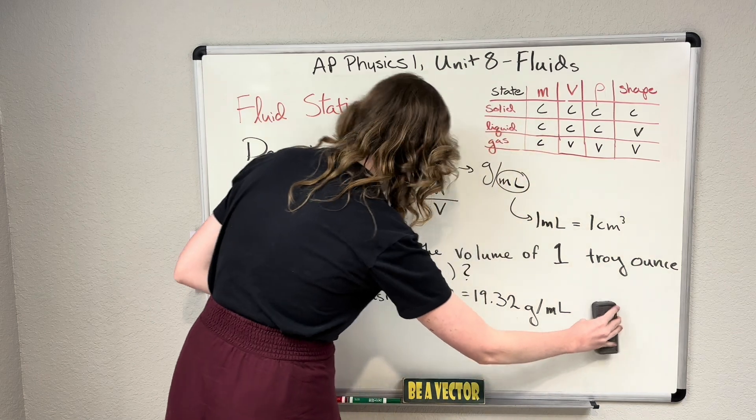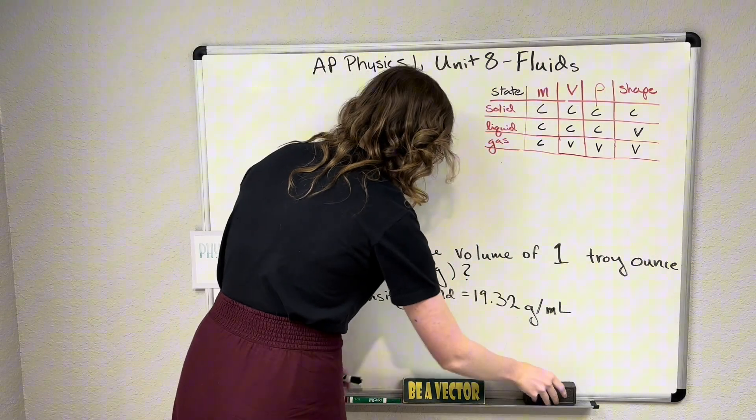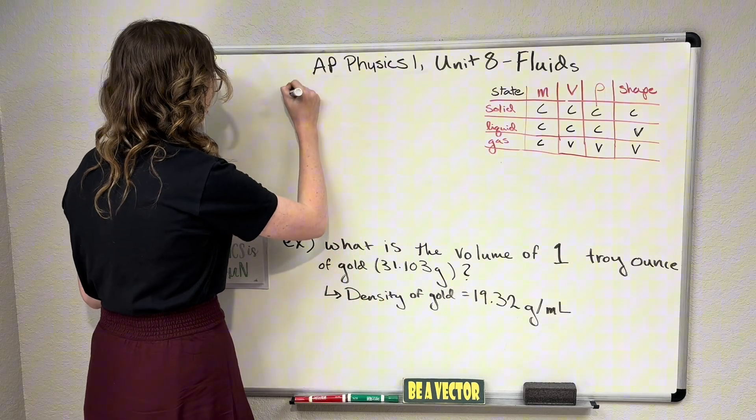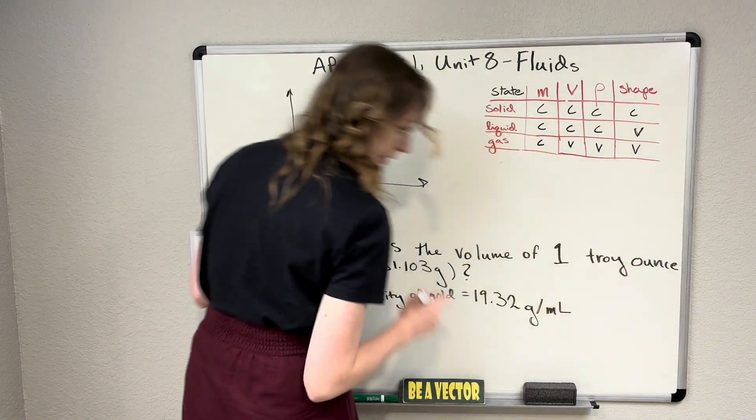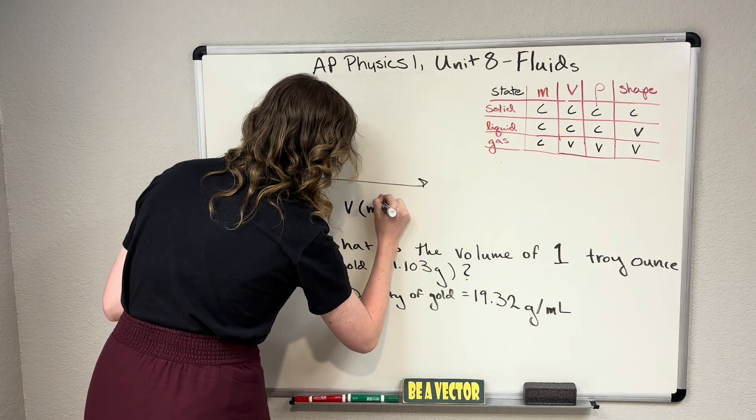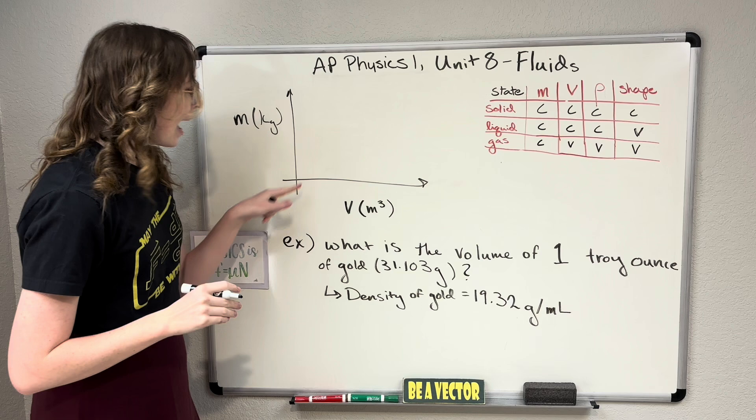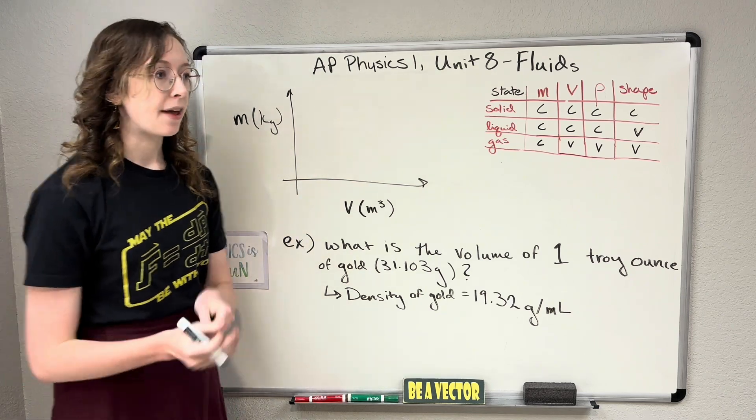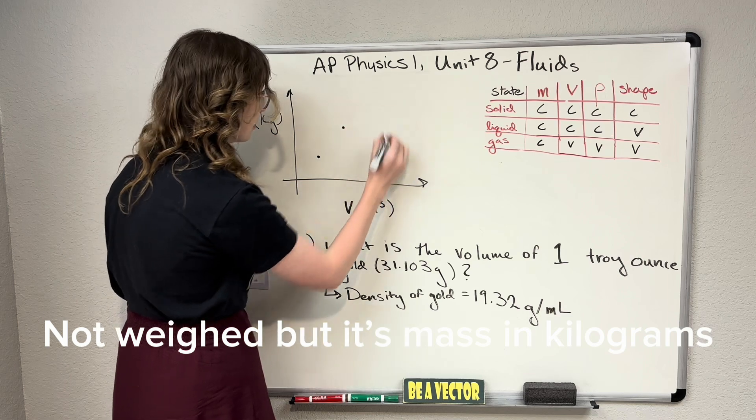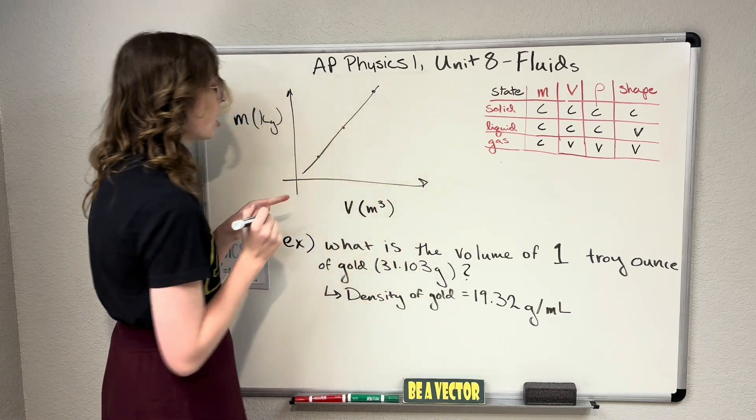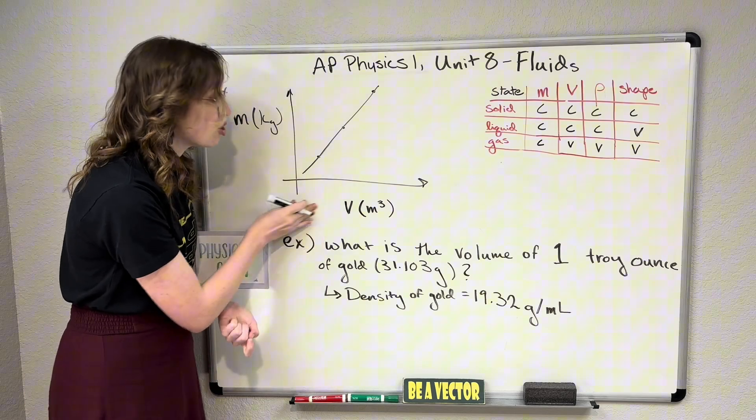All right. So let me erase all this so I have a little bit of room. And let's talk for a moment about what happens whenever we graph density. So if you were to graph on a little graph, let's say I put on my x-axis here, I put my volume of a substance like in cubic meters, for example. And on my y-axis here, I put my mass with units like kilograms. And I plotted the mass versus volume of a substance. So say I had one cubic centimeter of gold and it weighed this much, and then I had two cubic centimeters of gold, it would weigh more, and so on and so forth. And then I drew a line through those points.